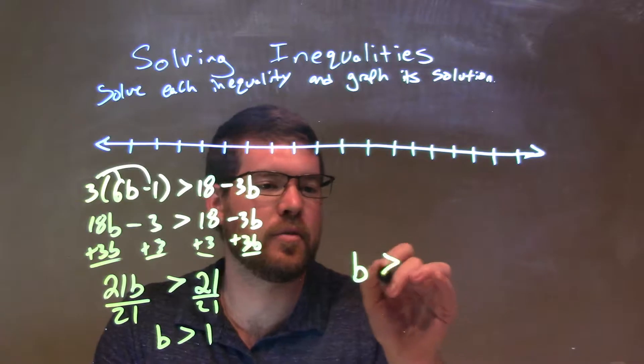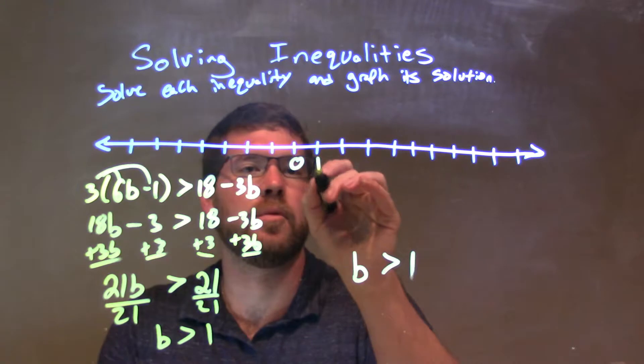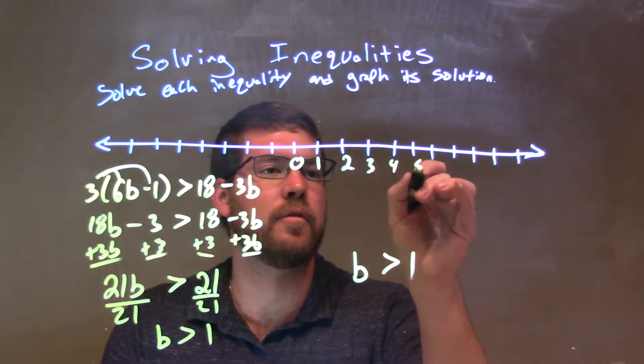And we have b is just greater than 21 divided by itself is just 1. So we have b is greater than 1 as our answer. So now let's graph it. Let's put 0 here, 1, 2, 3, 4, 5, 6.